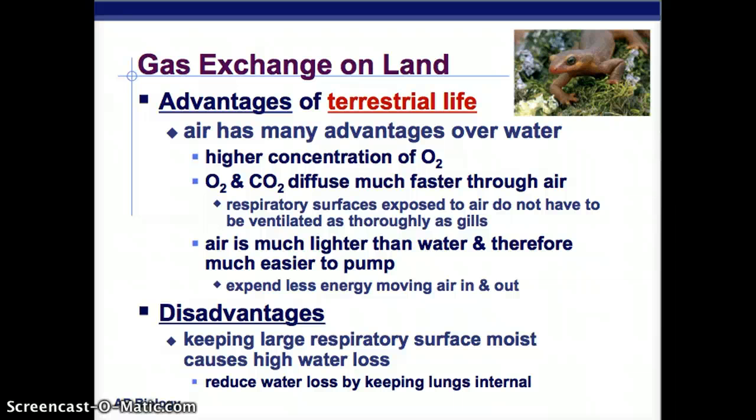Gas exchange on land has many advantages: air has a much higher oxygen concentration than water, oxygen and carbon dioxide diffuse much faster through air, respiratory surfaces don't need to be ventilated as much as gills do, and air is lighter and easier to pump so you expend less energy. The disadvantage is you must keep large respiratory surfaces very moist, which causes a lot of water loss. You can reduce that water loss by keeping lungs internal - that's why our lungs are internal.